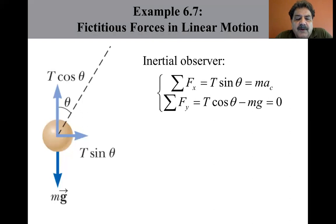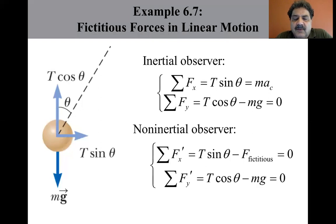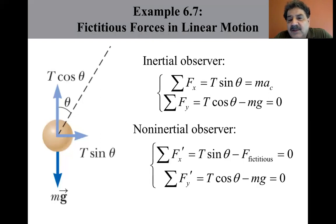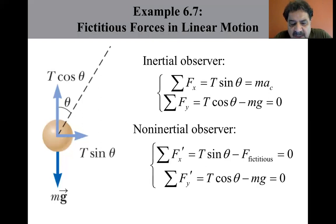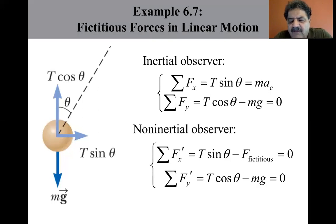Applying the particle in equilibrium model for the non-inertial observer in both directions: in the x-direction, T sin θ minus the fictitious force equals zero. In the y-direction, T cos θ minus mg equals zero. These expressions are equivalent to those for the inertial observer if the fictitious force equals mass times the centripetal acceleration.